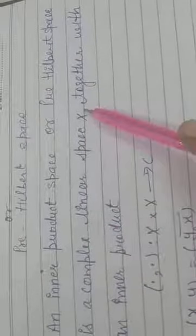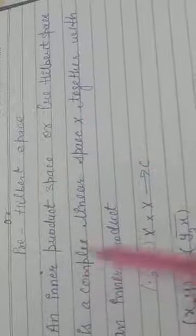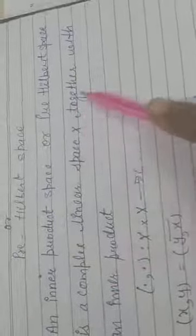Now see how an inner product space or pre-Hilbert space is a complex linear space X together with an inner product. Then it can be written as bracket dot, comma dot. We define this mapping for X cross X tends to C, which is a complex linear space.